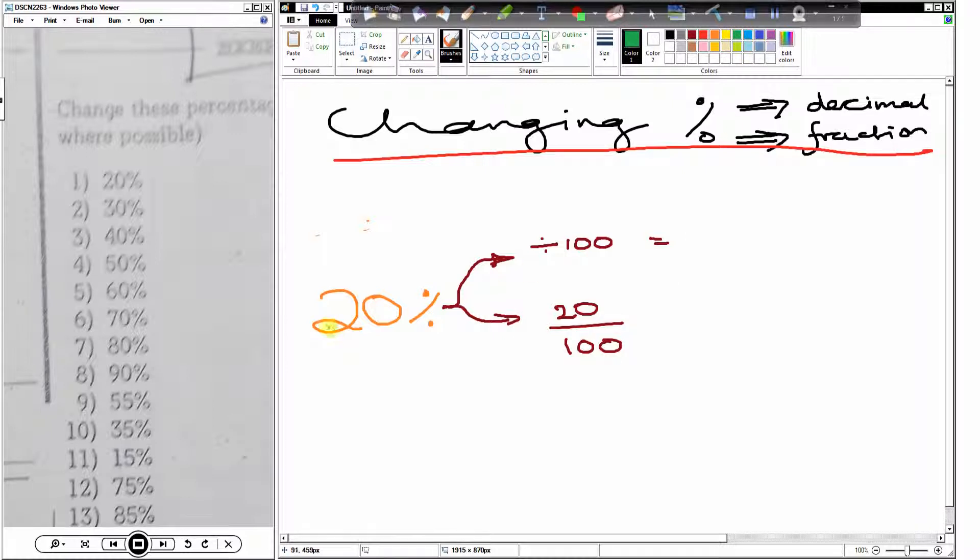Now, what's twenty divided by a hundred? Twenty divided by a hundred, we put this decimal point in, and we move it back one, two places. Zero point zero two zero. Incorrect. Zero point zero two.